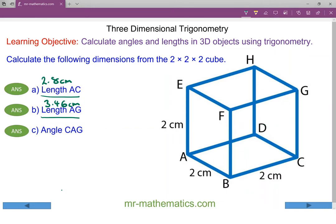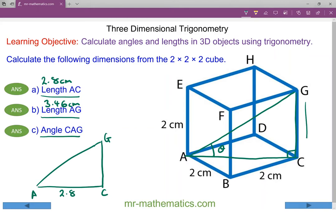And finally angle CAG we'll show as part of a right angle triangle CAG. We're going to call it theta and we know our right angle is again at C. So we'll sketch our right angle triangle ACG. We've already worked out AC as approximately 2.8 and we know CG is still 2. And we're going to work out theta.